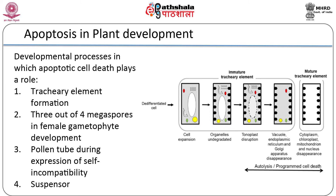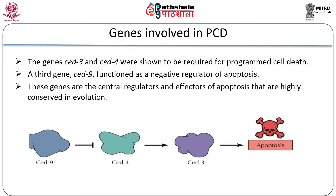Plant growth and development includes the degradation of cell organelles, protoplast, different tissues and organs. It is a phenomenon to eliminate redundant, misplaced, or damaged cells and maintain multicellular organisms. Apoptosis and plant programmed cell death have similarities like DNA laddering, caspase-like proteolytic activity in the cells, and cytochrome c release from the mitochondria.